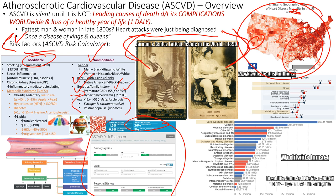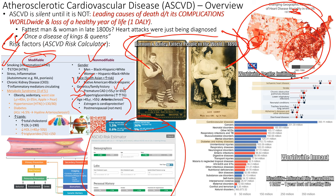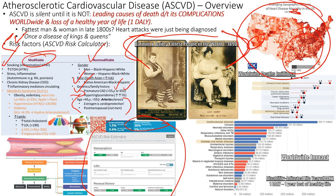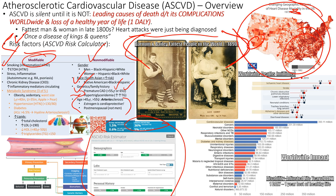Estrogen is cardioprotective, which is why pre-menopausal females have lower ASCVD risk than males. After age 65, both sexes have equal risk. Modifiable risk factors include smoking, which causes inflammation and vasoconstriction, leading to hypertension. Hypertension then damages vessel walls, creating a breeding ground for ASCVD to take hold.